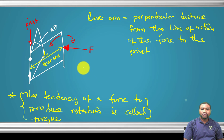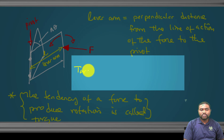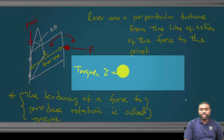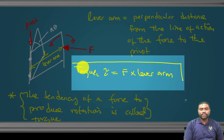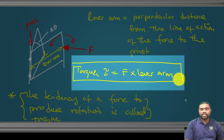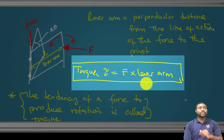So torque, represented by the Greek letter tau (τ), is equal to the force F multiplied by the lever arm.